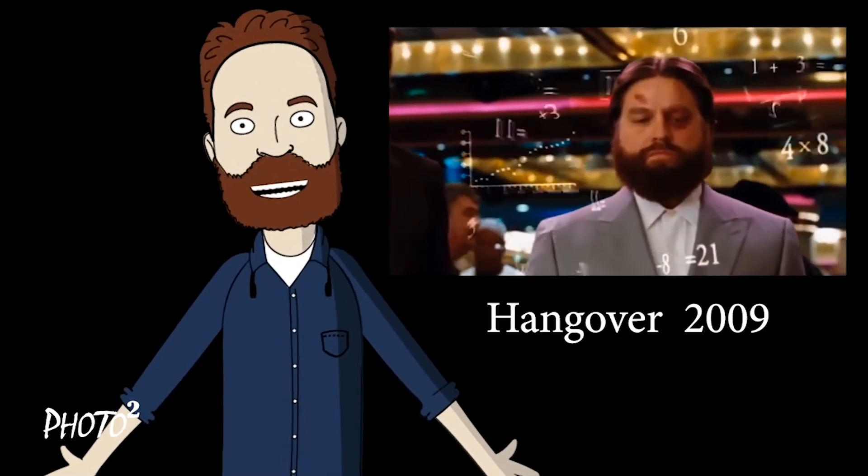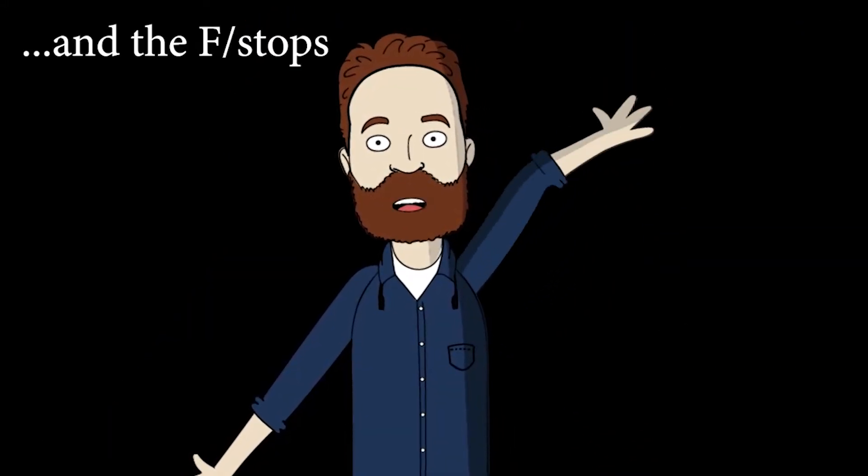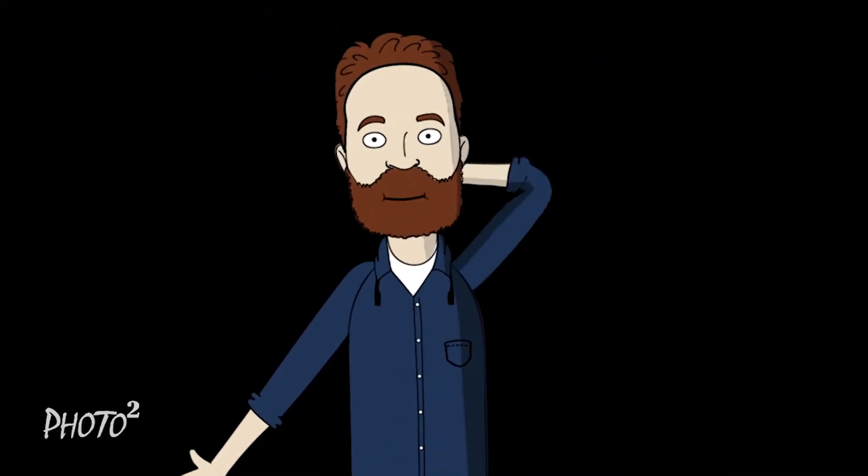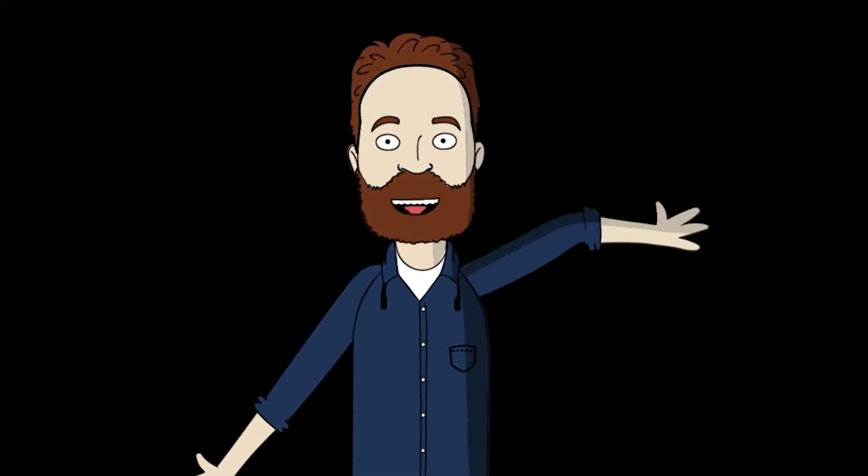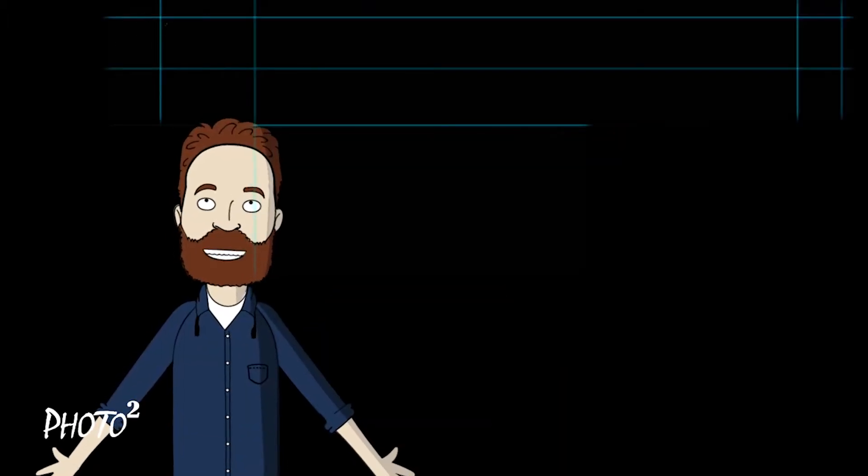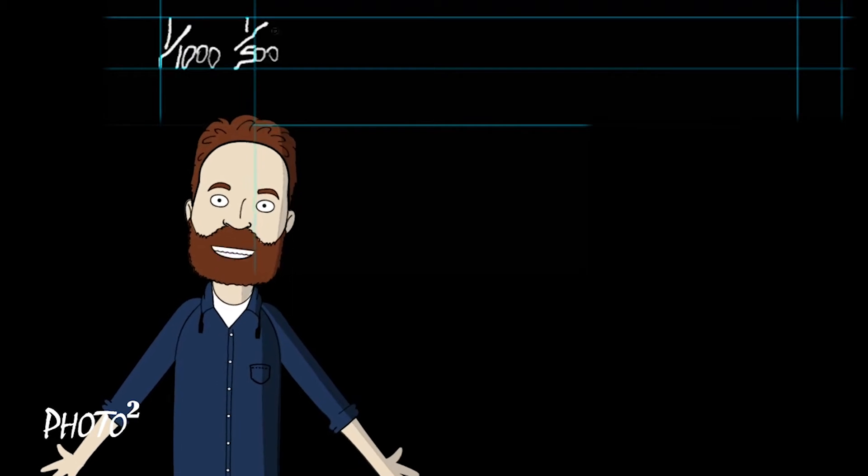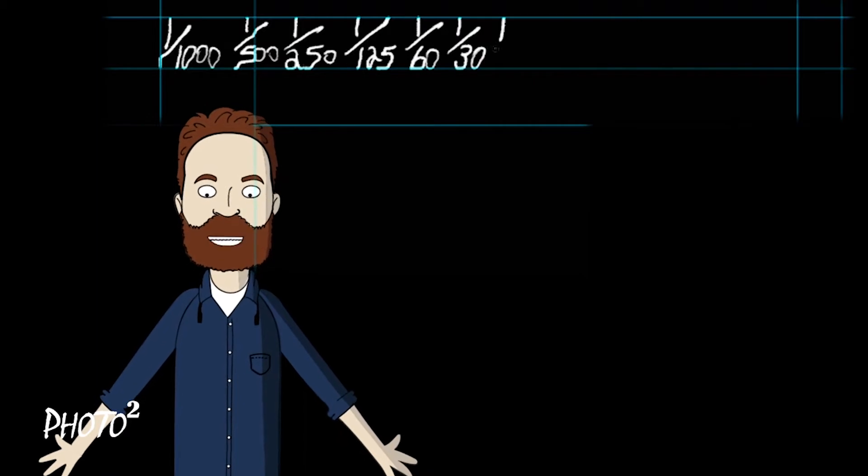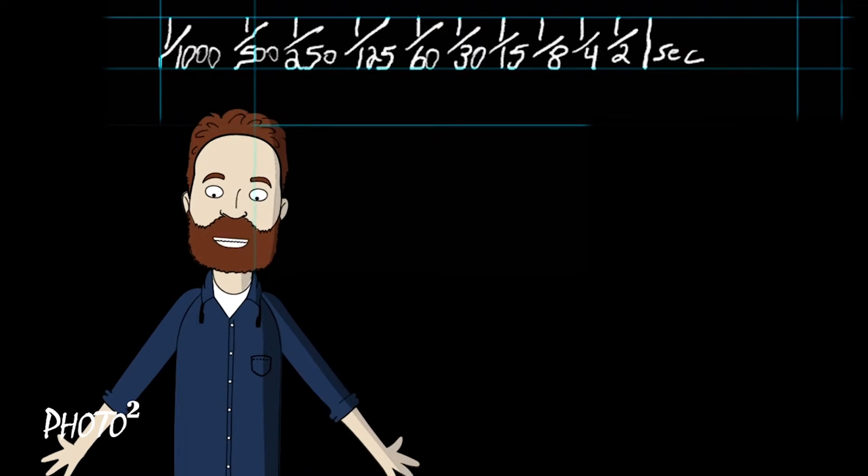So what we're going to do is I'm going to write the shutter speeds right up here, all across here. So let's get started, remember keep your eyes up here. Okay, so the shutter speed scale starts out at one one-thousandth of a second, then it divides by two all the way down. So one five-hundredth, one two-fiftieth, one one-twenty-fifth, one sixtieth, one thirtieth, one fifteenth, one eighth, one quarter, one half, one second. That's the full shutter speed range.